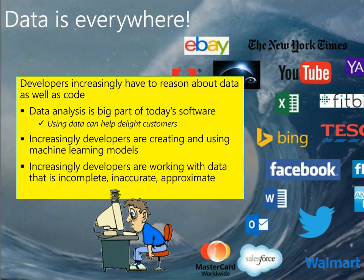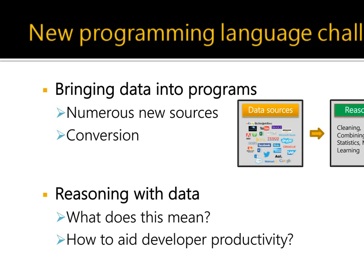Given this state of the world, what are the new programming language challenges? We think there are two main challenges. The first is data acquisition and manipulation — with lots of data in various formats, conversion and manipulation is time-consuming and error-prone, partly due to poor facilities in programming languages for implementing data transformations. The second challenge is how to reason over data: programs need to naturally deal with machine learning, statistical, and approximate computations. Unfortunately, good abstractions for these kinds of computations are virtually non-existent. Today we will discuss programming abstractions for reasoning with data.